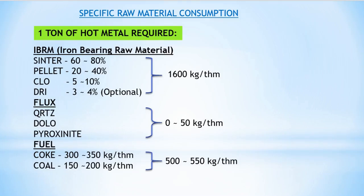Specific raw material consumption — one tonne of hot metal requires: IBRM (iron-bearing raw material) approximately 1600 kg per tonne hot metal, typically sinter 60–80%, pellet 20–40%, CLO 5–10%, DRI 3–4% (optional). Flux 0–50 kg per tonne hot metal (quartzite, dolomite, pyroxenite). Fuel 500–550 kg per tonne hot metal: coke 300–350 kg, coal 150–200 kg per tonne hot metal.